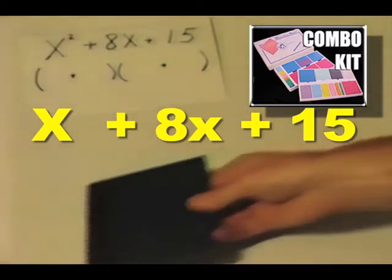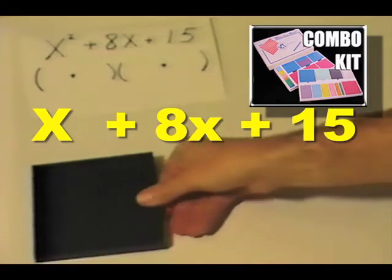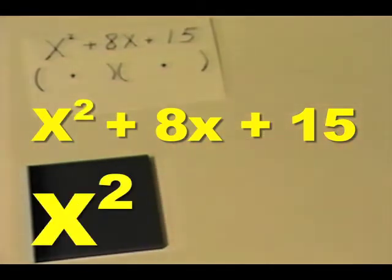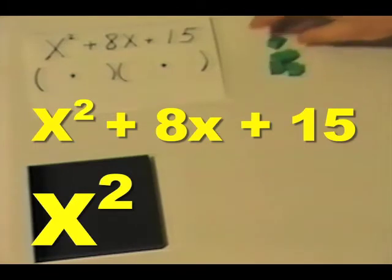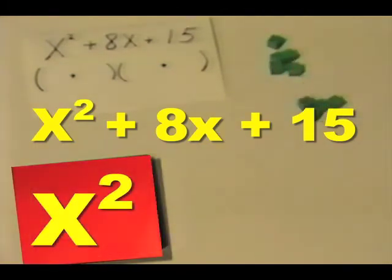We will get out our amount. First of all, we will get out x squared. And then we will get out what? Our units. One, two, three, four, five, six, seven, eight, nine, ten, eleven, twelve, thirteen, fourteen, fifteen.